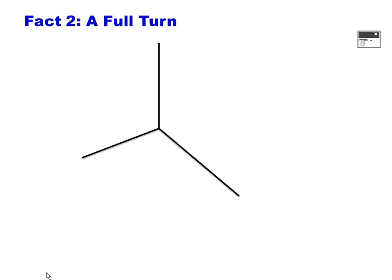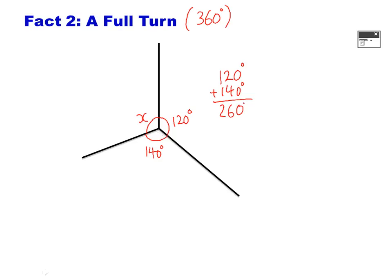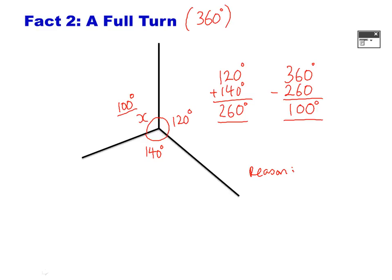Fact number two: a full turn. A full turn adds up to 360 degrees. So if we're looking for angle x, and we're given 120 degrees and 140 degrees, we add those up to get 260 degrees. We know it must add up to 360, so we do 360 take away 260, which leaves us with 100 degrees. So angle x is 100 degrees, and the reason is: a full turn is 360 degrees.